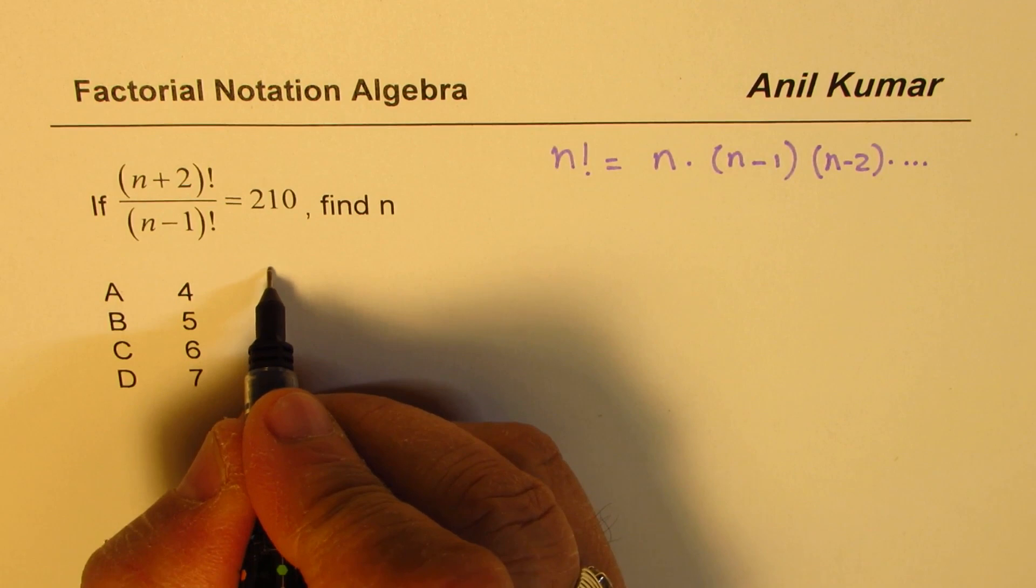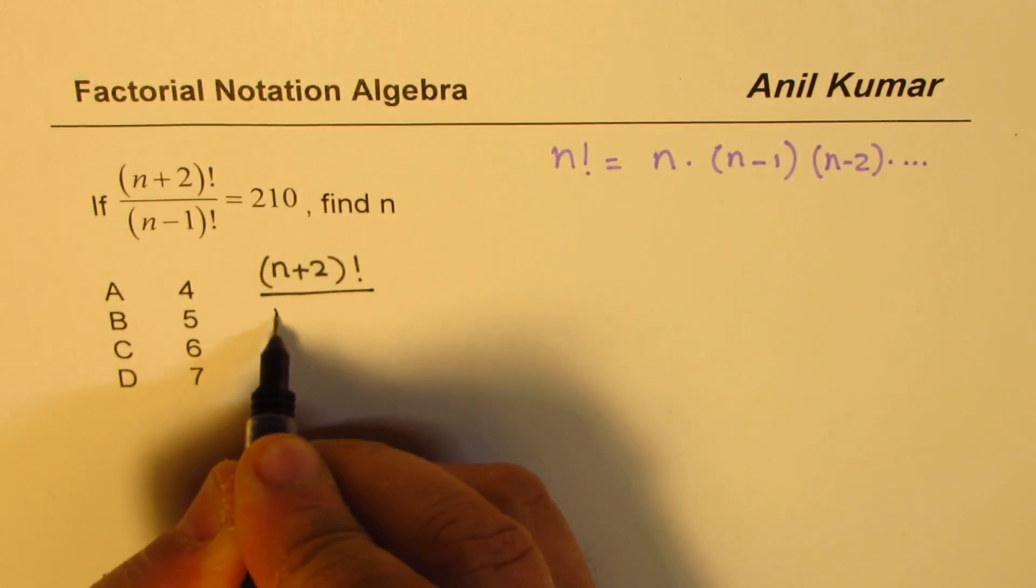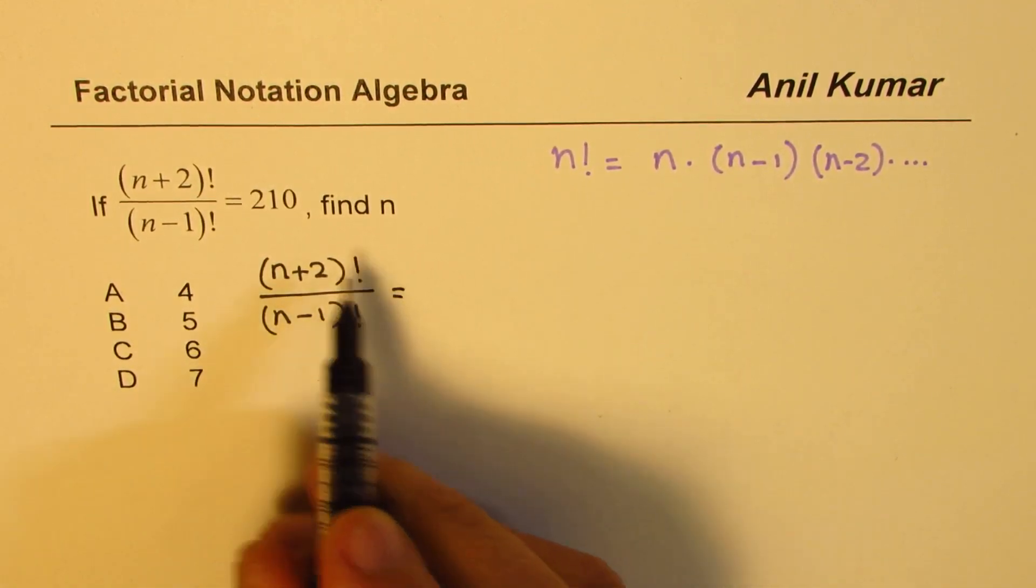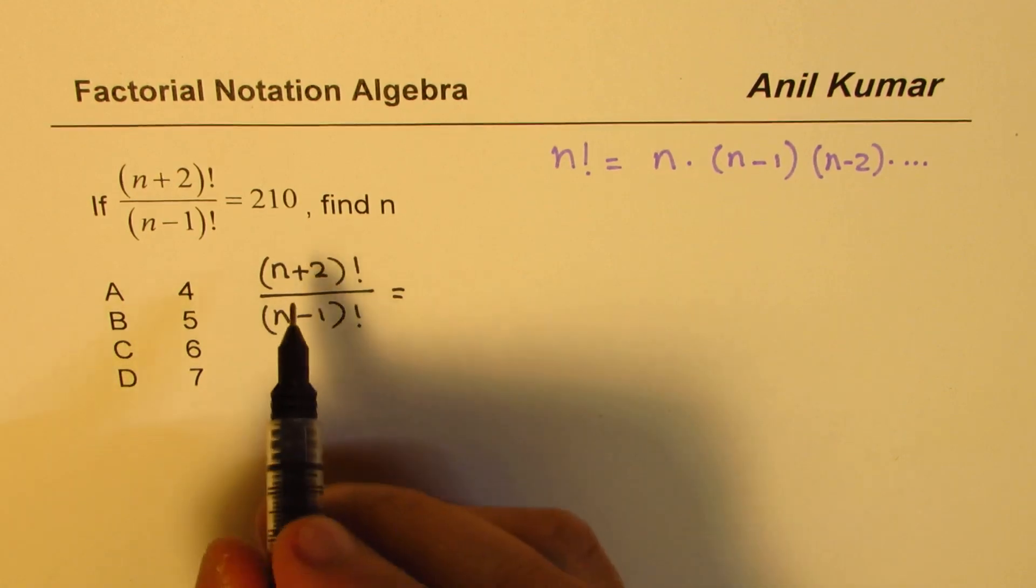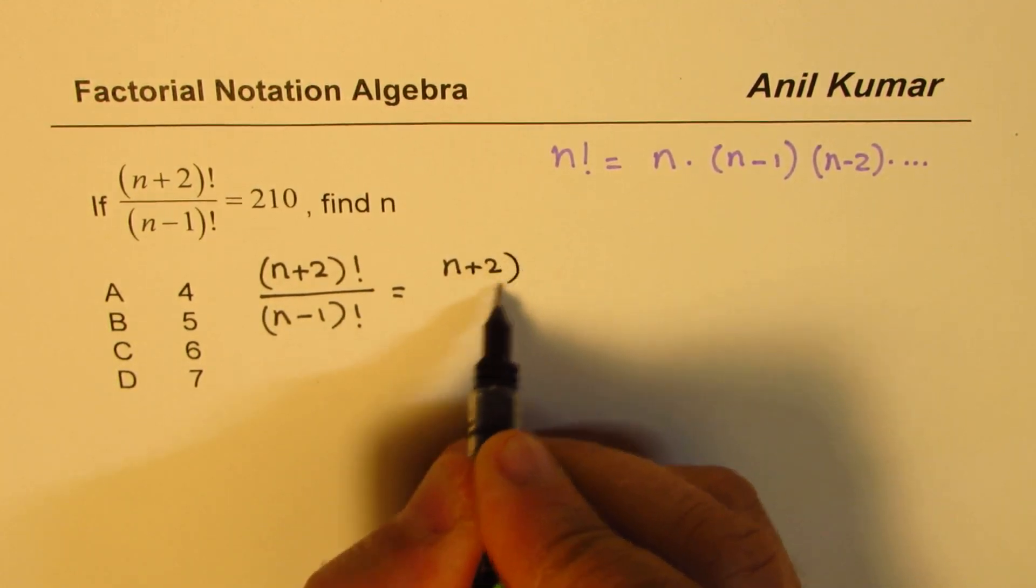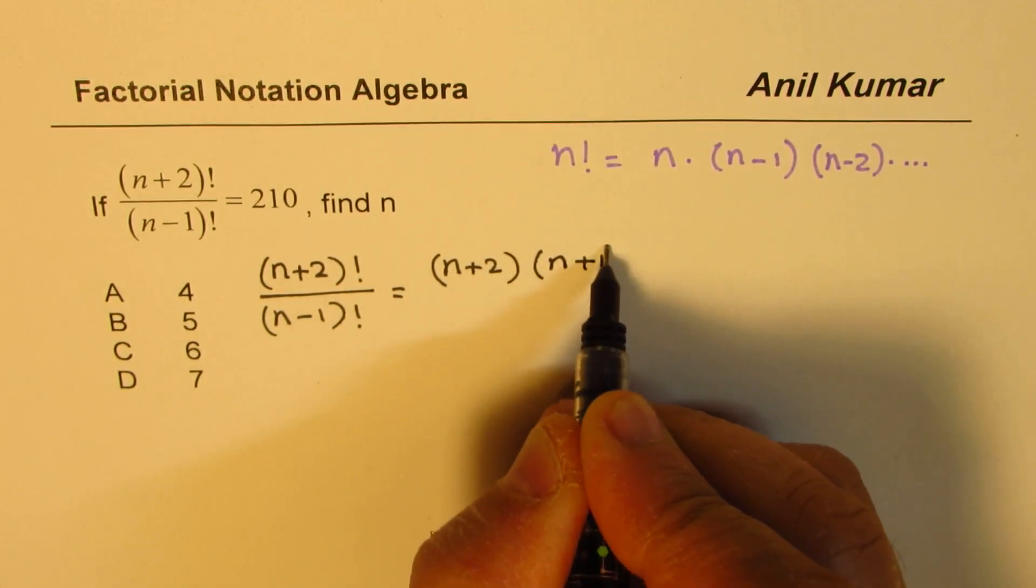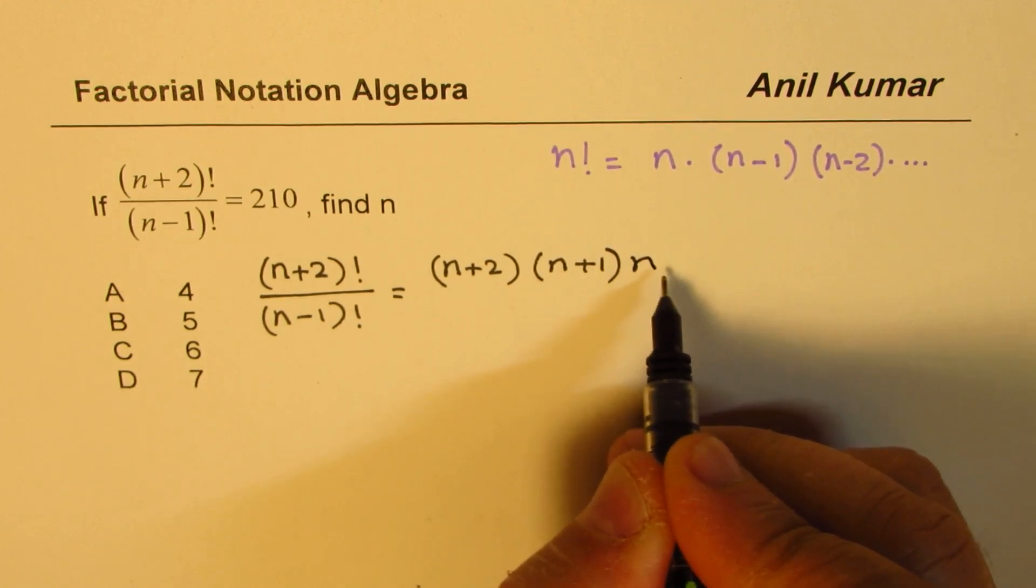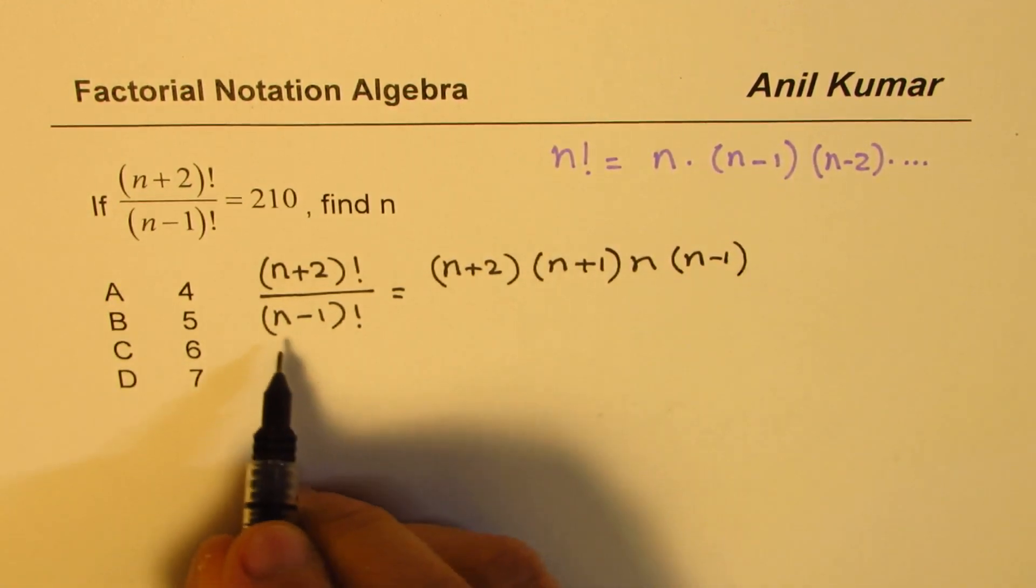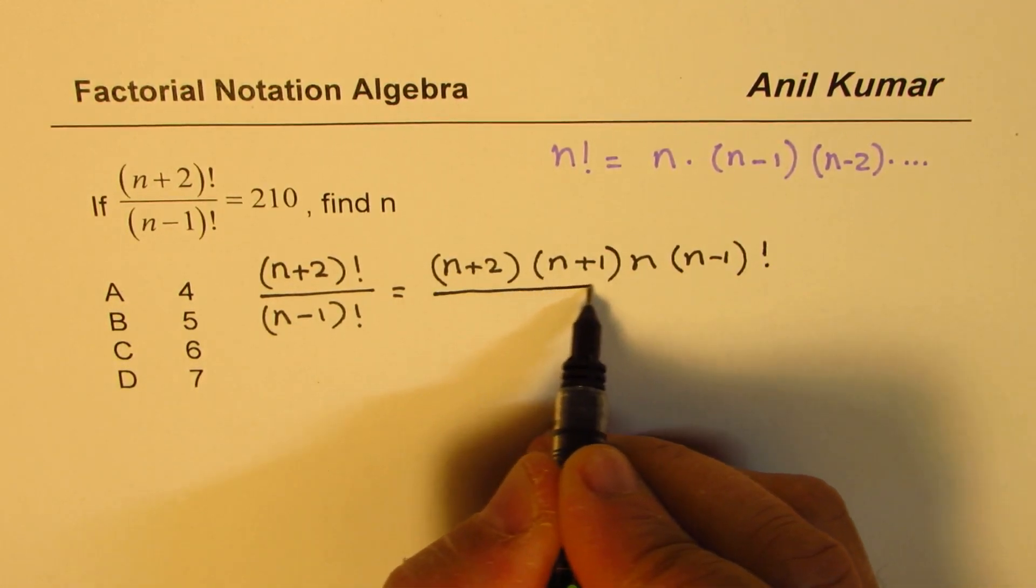What we have here is (n+2)! in the numerator and (n-1)! in the denominator. Let us rewrite this in a simpler form. (n+2) times, if you take away 1, you get (n+1), and if you take away 1, you get n, and then what you get is (n-1). Since (n-1)! is in the denominator, we'll stop here.